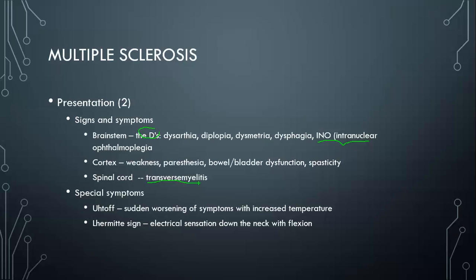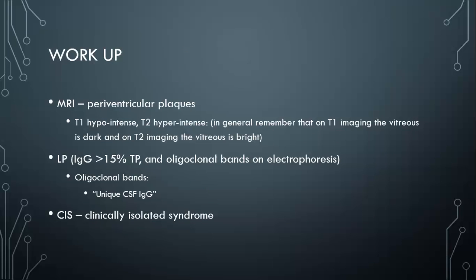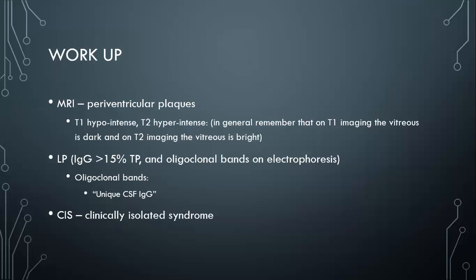When suspecting MS, the workup consists of two main components. One is MRI — you're looking for the classic periventricular plaques and getting an idea of the lesion burden the patient is experiencing. We'll also see how that's helpful in prognosis later on. The second big thing is doing an LP, where you look for the amount of IgG relative to the total protein — greater than 15% would be concerning for MS. You also look for oligoclonal bands on protein electrophoresis.